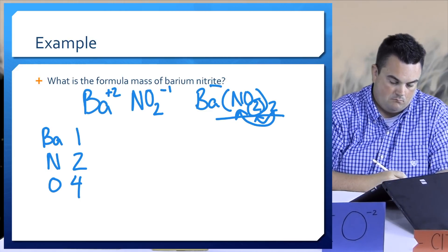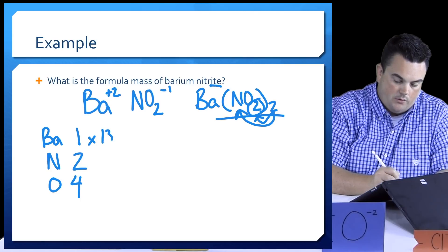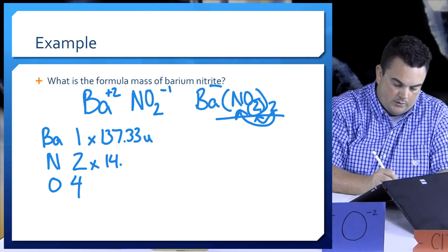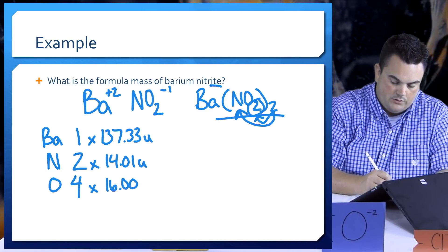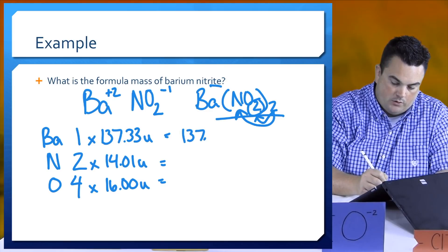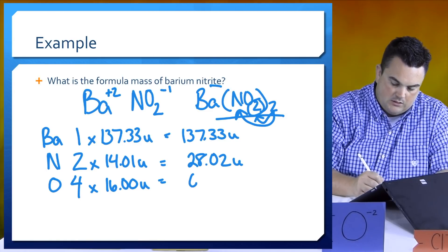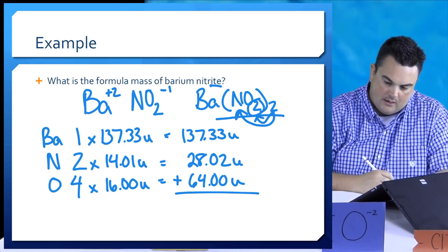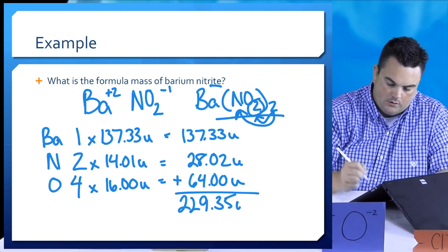We can continue on as before finding the formula mass. We need the atomic masses rounded to two decimal places off the periodic table. Barium rounds to 137.33 U. Nitrogen is 14.01 U to two decimal places and then that oxygen is the same as before, that's always 16.00 U. Let's multiply through. That's easy, 137.33 U, 28.02, and 64.00 U. All we have to do is add those up and get our final answer. Adding them all up I get 229.35 U.